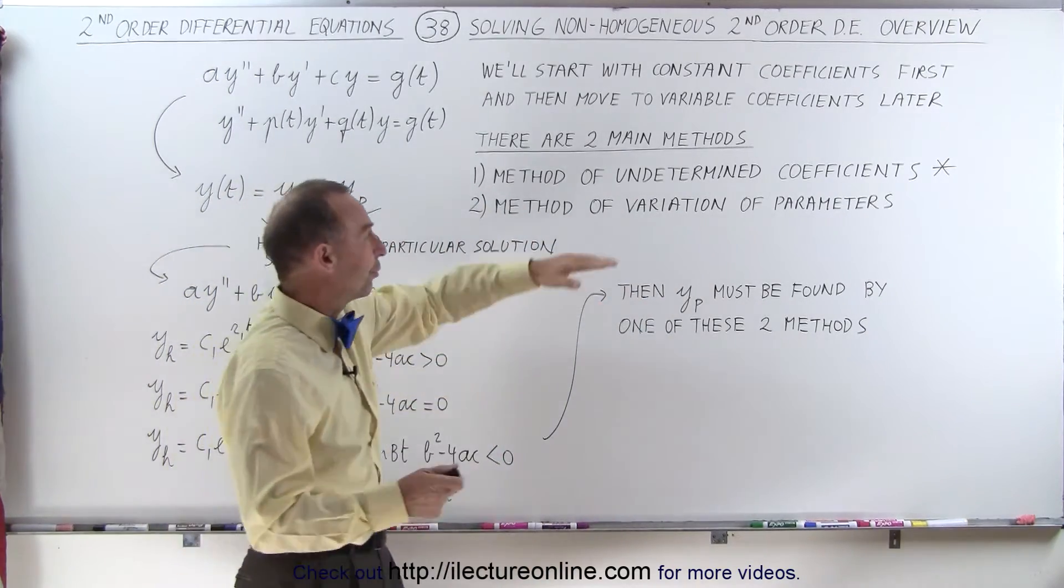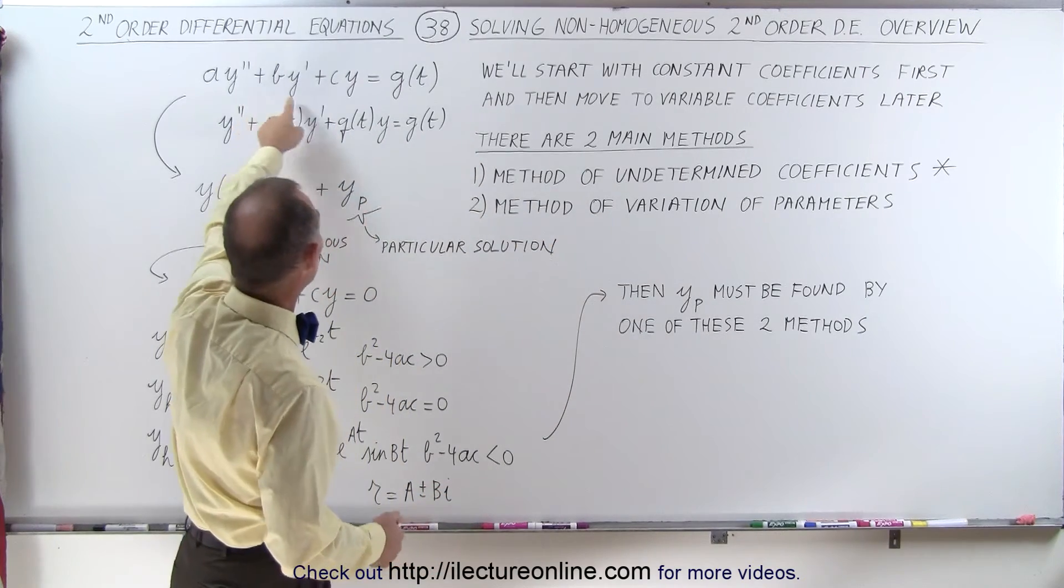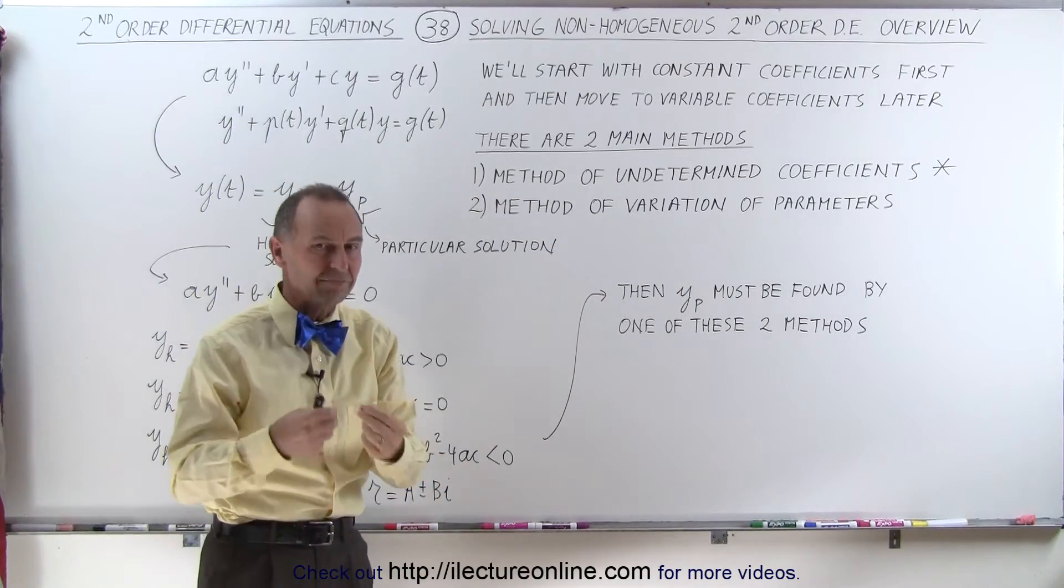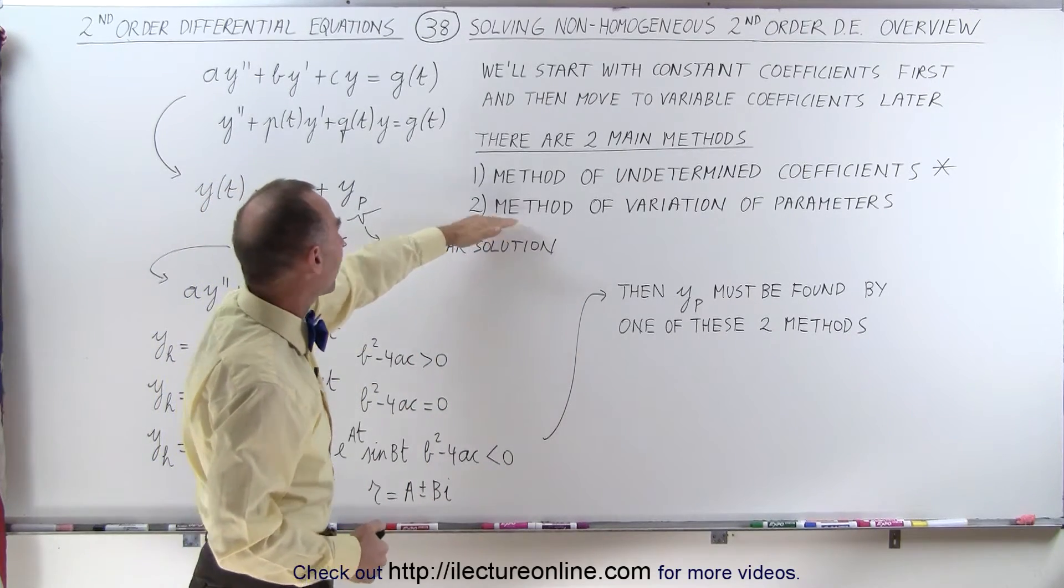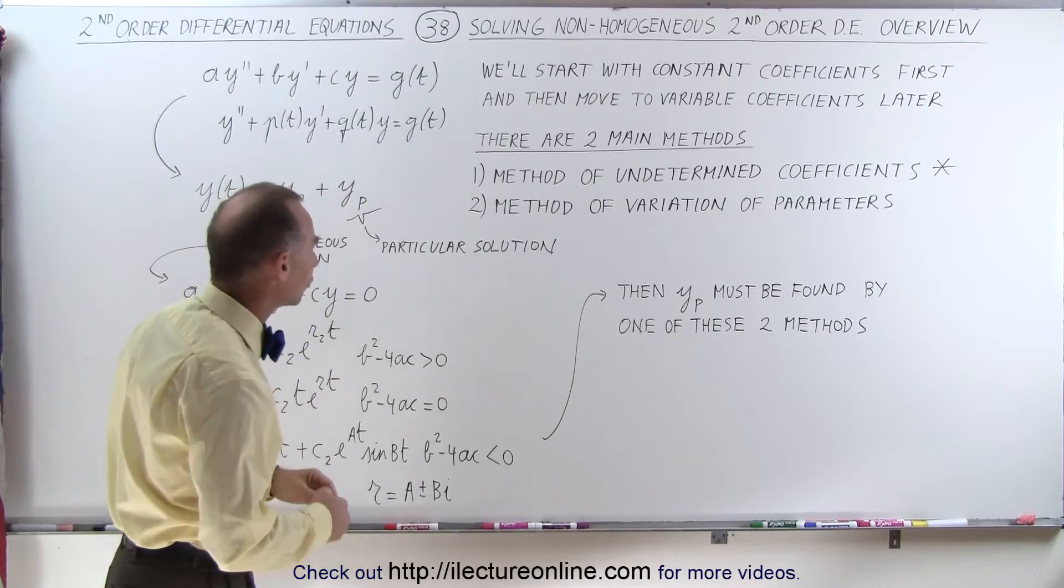But once we go to non-constant coefficients, then we need to use the method of variation of parameters. And we'll first start with using this method on equations that have constant coefficients to get kind of familiarity with the method. And then we'll move on to using the method of variation of parameters when we have non-constant coefficients.